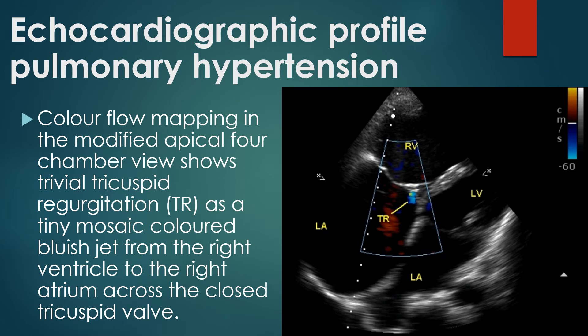Color flow mapping in the modified apical 4-chamber view shows trivial tricuspid regurgitation as a tiny mosaic-colored bluish jet from the right ventricle to the right atrium across the closed tricuspid valve. The Doppler cursor can be aligned to the jet only with great difficulty and a good envelope may not be obtained. Hence, estimation of right ventricle systolic pressure from the TR jet will be difficult in this case. Multiple tilted views may be imaged to get better TR signals.